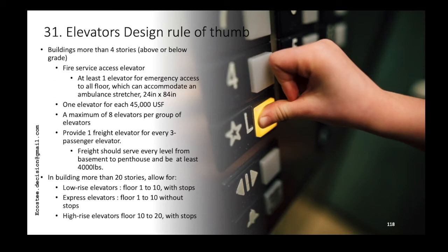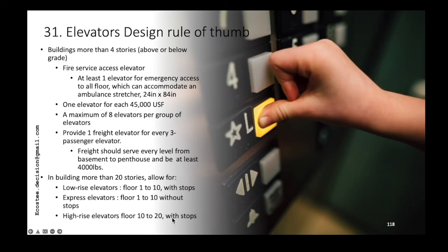In buildings with more than four stories, some elevators are assigned to lower floors and others to higher floors. For instance, a low-rise elevator might serve floors one through ten only. If you want to go to floor seven, you take the low-rise elevator. To reach floor 17, you take the express elevator directly to floor ten, get out, and then switch to the high-rise elevator that runs from floor 10 to 17.